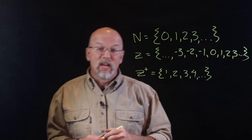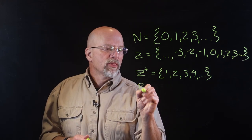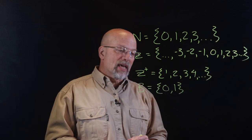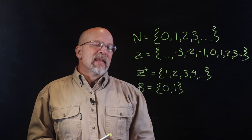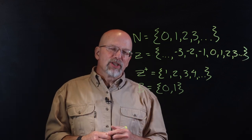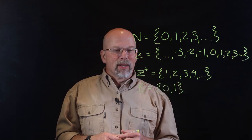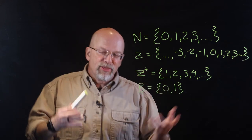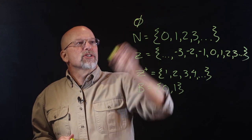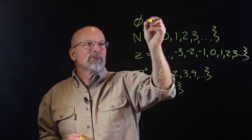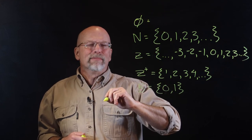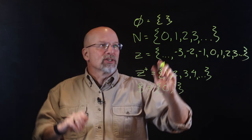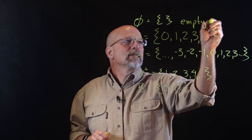We also talked about the binary set, which is just 0 and 1 — those are the only two elements inside the binary set. It turns out there is another special set important to our discussion of set theory, described with a zero with a line through it.